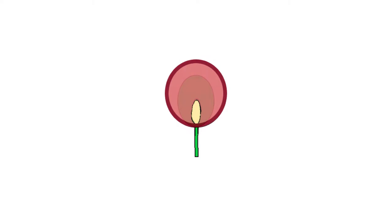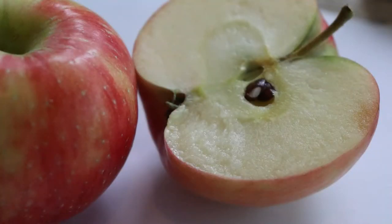Now as a fruit grows and matures, the seeds develop within it. Now a fruit consists of two main parts, which are the seeds and the ovary wall.